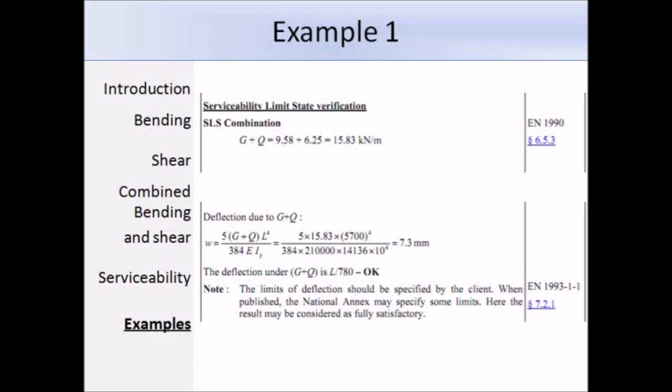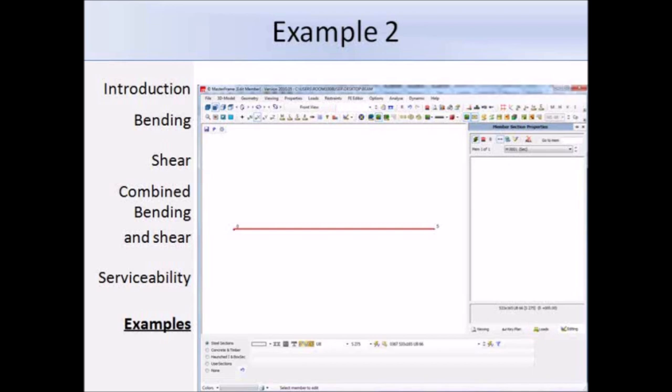This is the second example that I'll go through, and I'm going to be using the Master Series software. We're using Master Frame. I've drawn out a 5 meter long beam, and I've assigned some section properties to it. It's a 533 times 165 times 66 UB in S275 steel. We can go on and put on the loading. Here we have a dead load of 50 kN per meter, and a variable live load of 20 kN per meter on the beam.